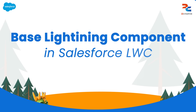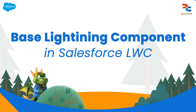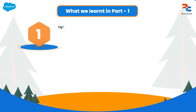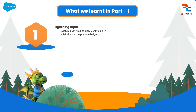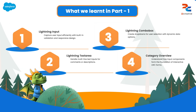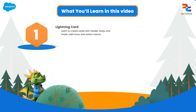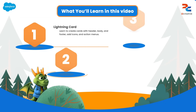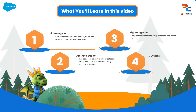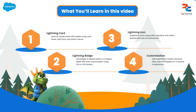Hello everyone and welcome back to our series on base lightning components in Salesforce LWC. In part 1, we broke down the input components category. You learned about essential components like lightning input, lightning text area, and lightning combo box. If you missed that video, the link is right down in the description. Today, we are diving into our next major category: display components. We will cover three fundamental components — lightning card, lightning badge, and lightning icon.